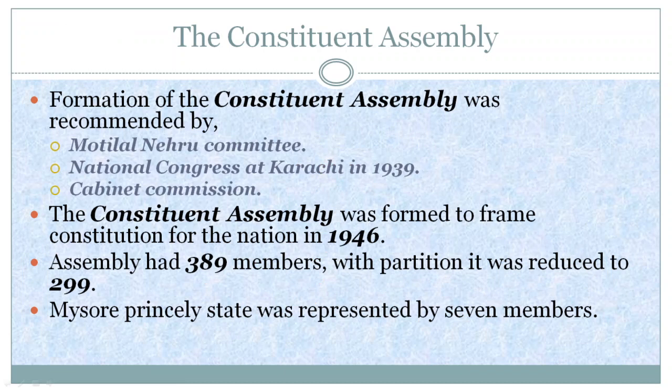The Indian Constituent Assembly: The recommendations of the Motilal Nehru Committee and the decision taken by the meeting of the National Congress at Karachi in 1939 emphasized the need for the formation of a Constituent Assembly. As per the recommendation of the Cabinet Commission, a Constituent Assembly with Indian members was formed in 1946. The Assembly had 389 members. With the partition of India, the total number came down to 299. There were 7 members from the Mysore princely state.